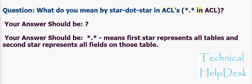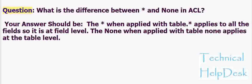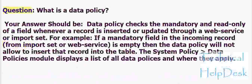Question: What do you mean by star dot star (.*.) in ACLs? Your answer should be: The first star represents all tables and the second star represents all fields on those tables. The asterisk, when applied with a table, applies to all the fields, so it is at field level. The 'none', when applied with a table, applies at the table level.